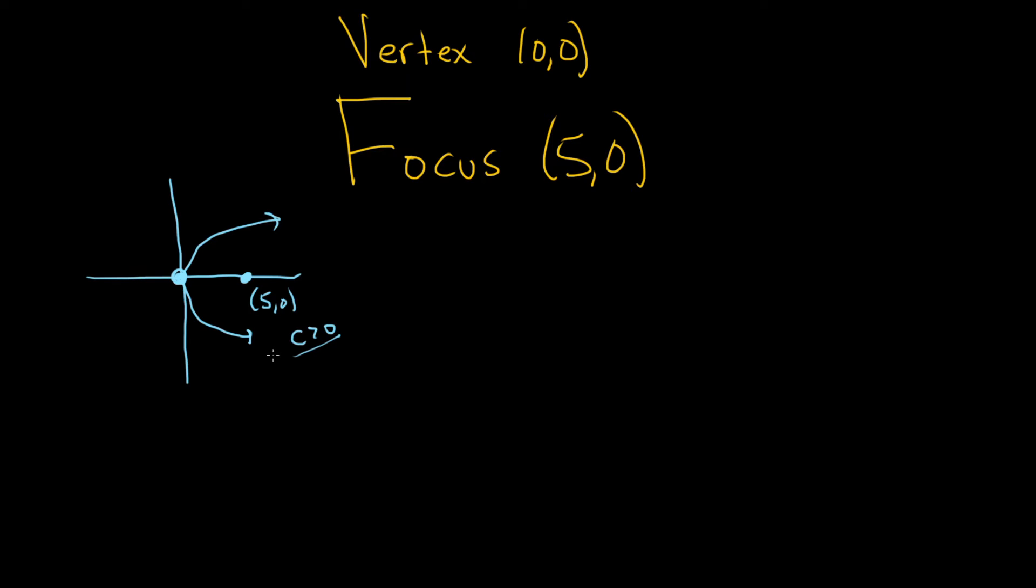So whenever the parabola opens left and right, the y is being squared. So the formula is (y - k)² = 4c(x - h). So super key. So whenever a parabola opens left and right, this is the formula that you use. And we know that c is positive.